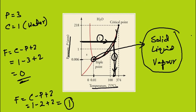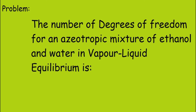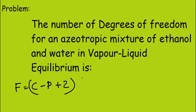Now let us solve a problem. The problem states: the number of degrees of freedom for an azeotropic mixture of ethanol and water in vapor-liquid equilibrium is? We know that F equals C minus P plus 2, but this is applicable for non-azeotropic mixtures. For an azeotropic mixture, we need to subtract 1.